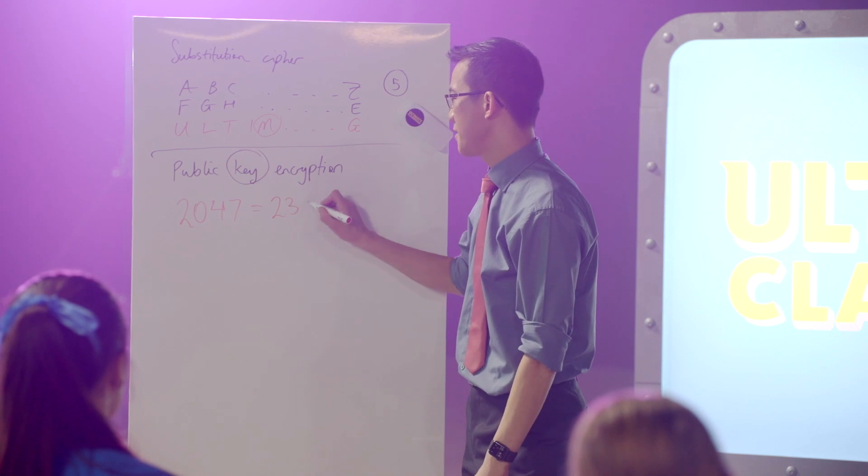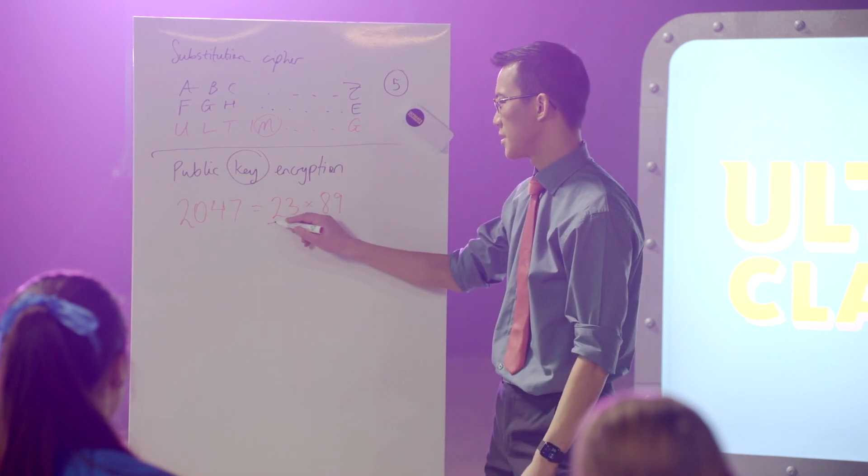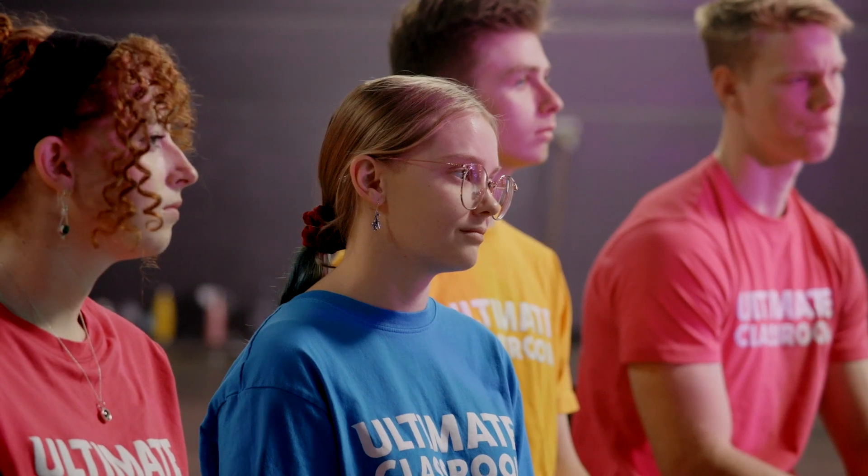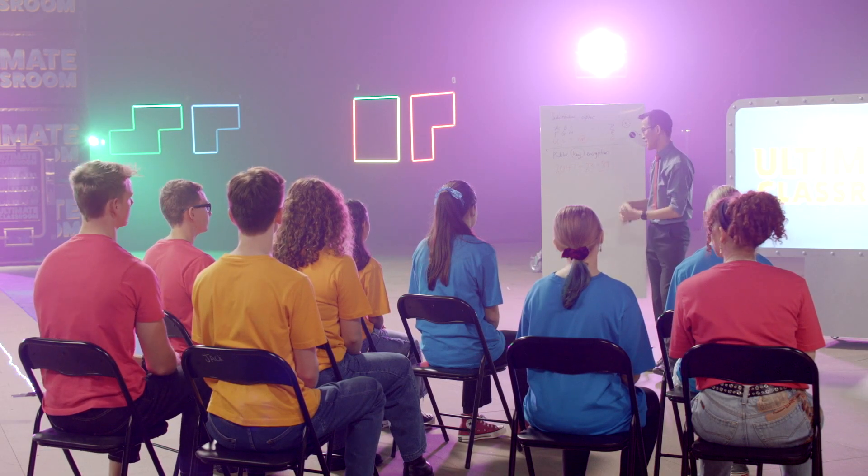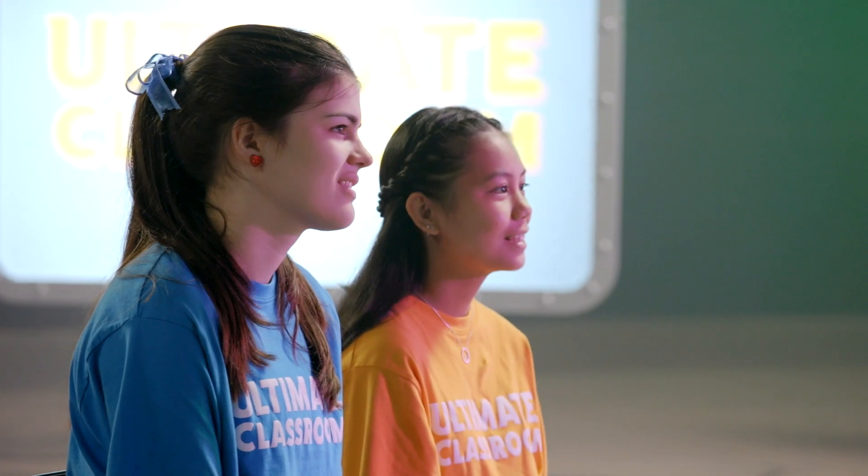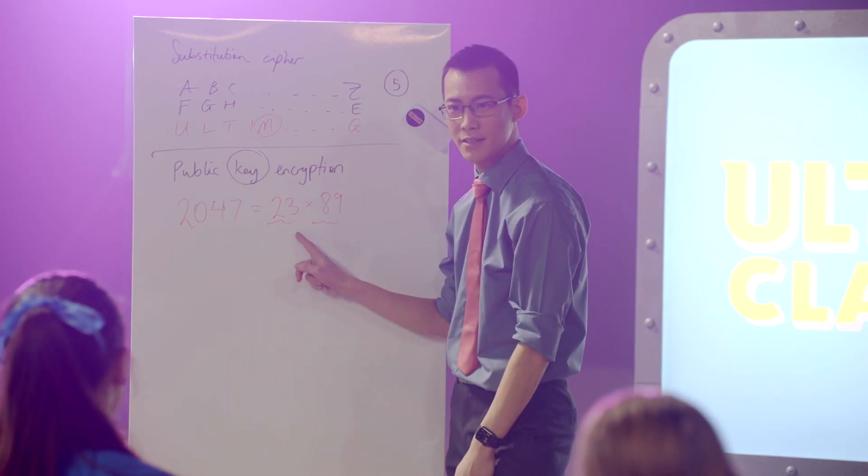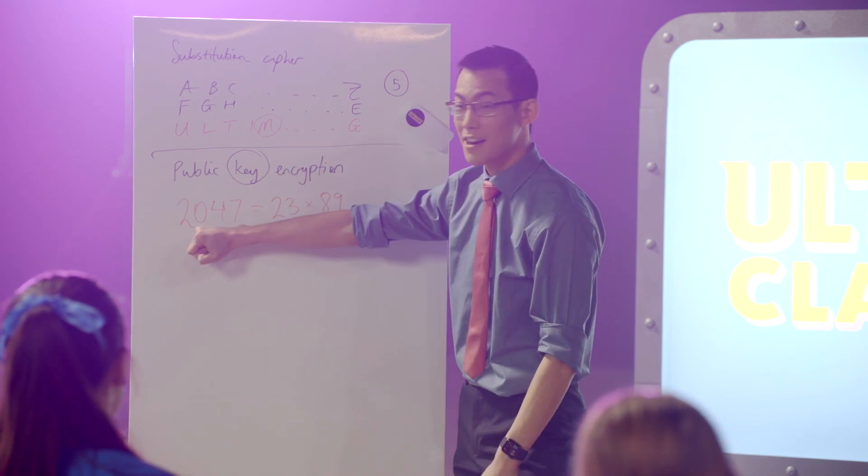They happen to be 23 and 89. Now can anyone have a guess, these numbers here, they haven't been chosen at random. Anyone have a think what kind of special properties might they have? Are they prime? They're prime, well done Gemma. That's why 2047 doesn't have any other ways you can factorize it, because if these had more factors then so would this number.